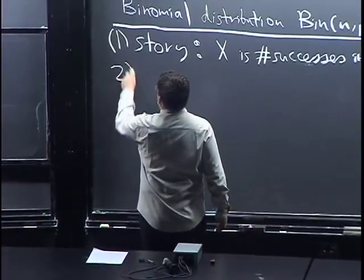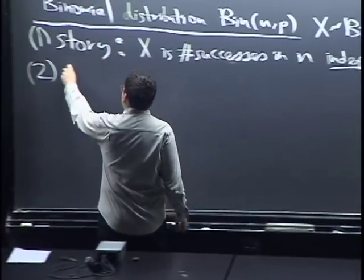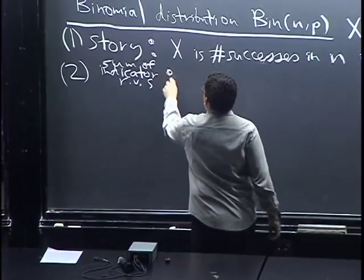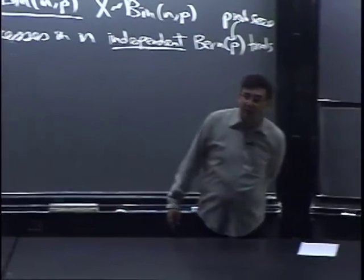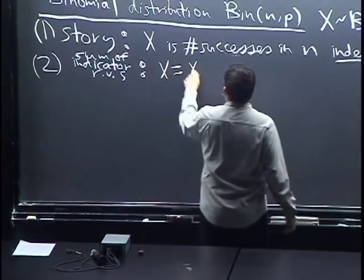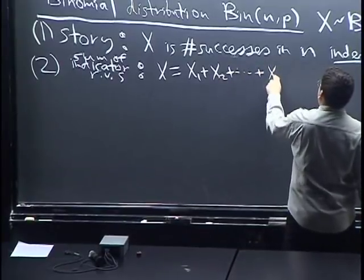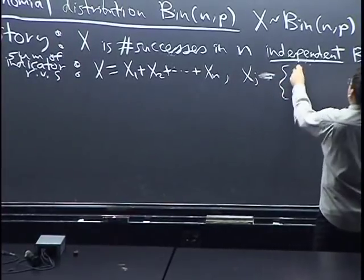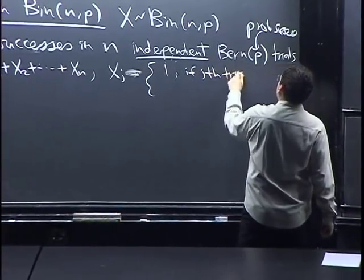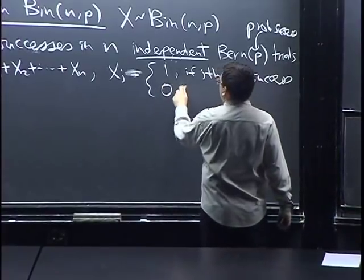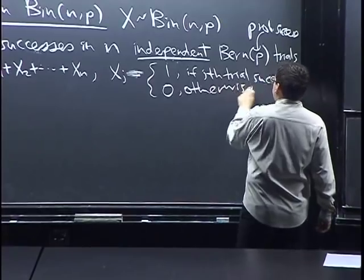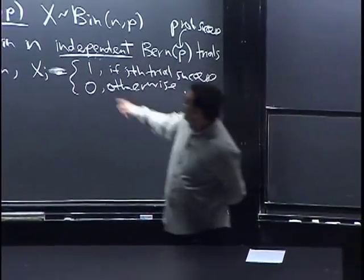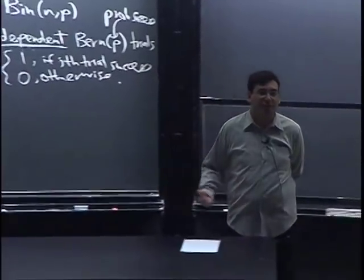The second way to think of a binomial is as a sum of indicator random variables. We can think of X as X1 plus X2 plus ... plus Xn, where Xj is 1 if the jth trial is a success, and 0 otherwise. That's called an indicator random variable — it indicates whether the jth trial was successful. 1 indicates success, 0 indicates failure.